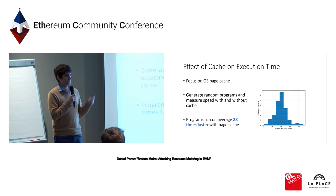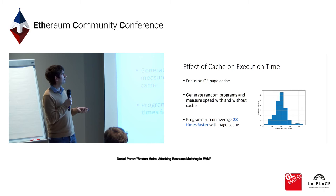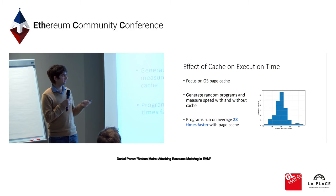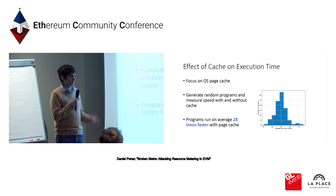We looked at why this variance was so high — as often for IO-related operations, it's due to caching. We analyzed how the page cache affected contract execution time by generating random programs and measuring execution time with and without the page cache. We found that on average, programs took 28 times longer to execute when the page cache was empty — a 28x factor that is absolutely not reflected in the pricing whatsoever.